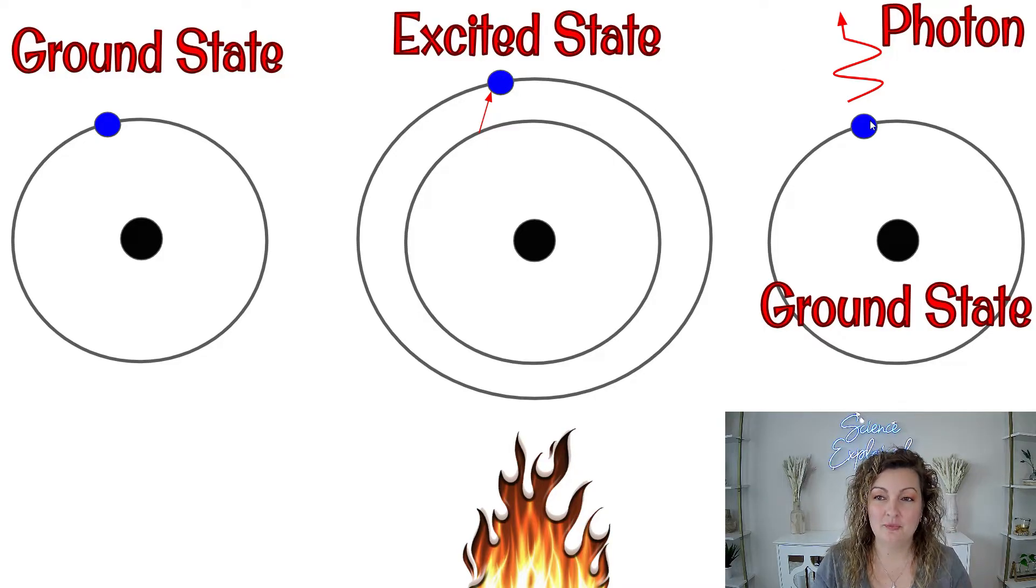So it's going to eventually fall back down to its ground state, which is where it originally started from. But when it makes that transition back down, it will actually shoot out a photon, and a photon is just a ray of light.